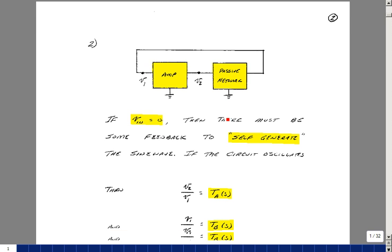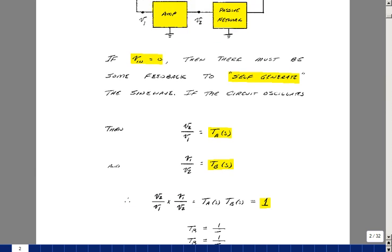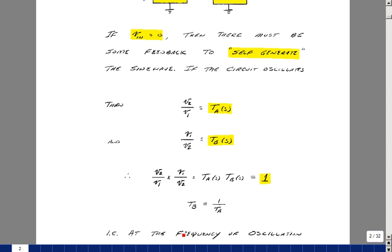But suppose that we can do this. What are some of the properties of these two boxes? Well, if you solve or measure for V2 divided by V1, that's the transfer function of, let's call this box A, and then the output over the input here for this passive circuit would be V1 over V2, and let's call that the transfer function of box B. Now if you multiply those two transfer functions, the V2's and the V1's cancel, and you get that the product of the transfer functions of these boxes are equal to 1.